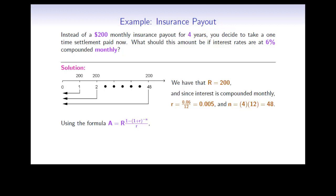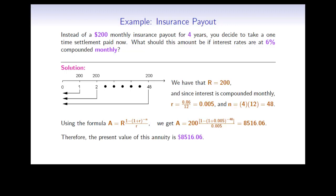Using the present value formula for an annuity, A equals capital R times [1 minus (1 plus r) to the power minus n], all divided by r. We get A equals $8,516.06. Therefore, the present value of this annuity — in other words, the settlement you should be paid now — would be $8,516.06.